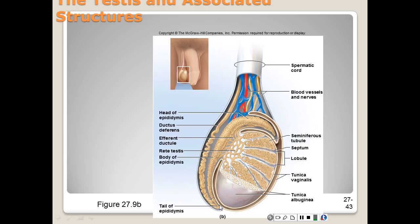Sperm remains fertile for about 40 to 60 days, and if not ejaculated, they disintegrate and are reabsorbed. The ductus deferens — also called vas deferens — begins where the tail of the epididymis ends, straightens out, and makes a 180-degree turn.